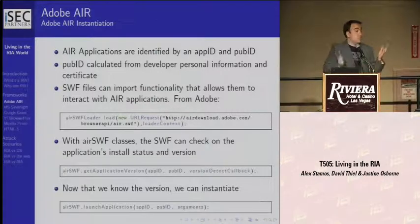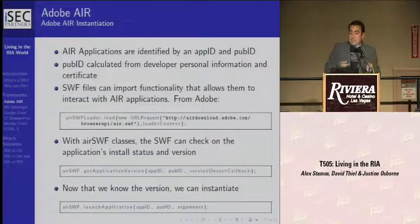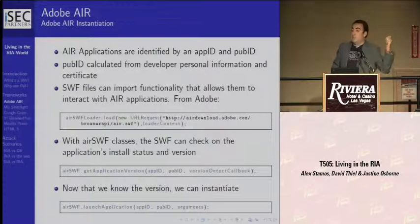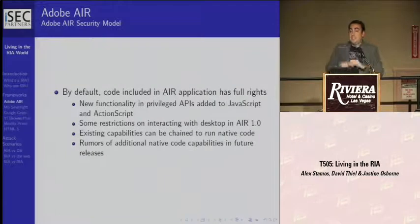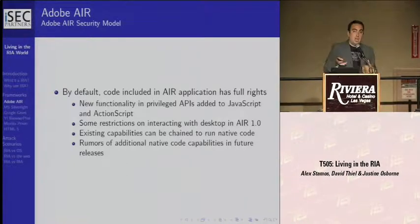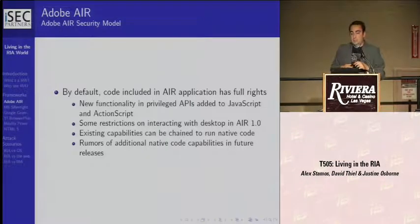There's no way to prevent malicious Flash applets from finding out what AIR apps you have installed and their exact version. Once you know it's installed, it's pretty simple to just launch it — calling a new function called launch application, giving it the app ID, the pub ID, and arguments. That's an array of argument objects passed to it. This can be passed from a non-trusted Flash SWF into a trusted Adobe AIR application.